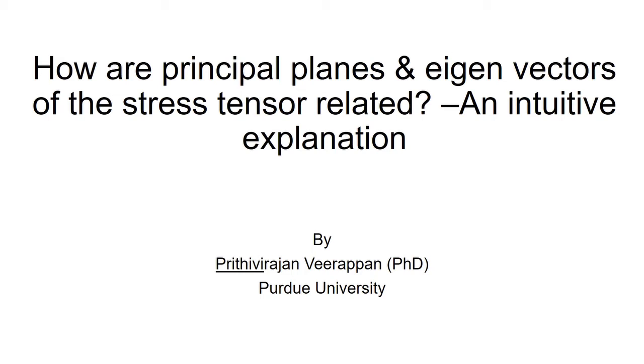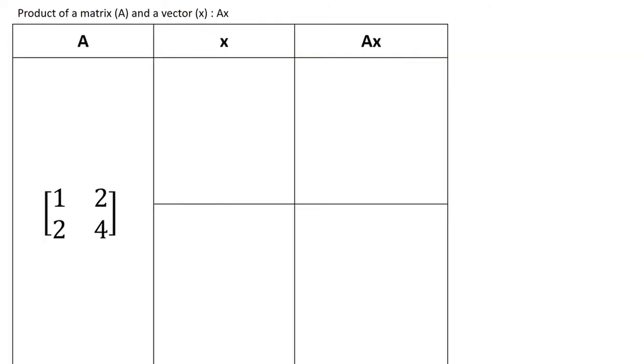Let me explain the eigenvalues and vectors for you now. Let's first analyze the product of a matrix A and a vector x. Let me illustrate this with a simple example. I have taken A as 2 by 2 matrix as shown and we shall consider two different cases for x.